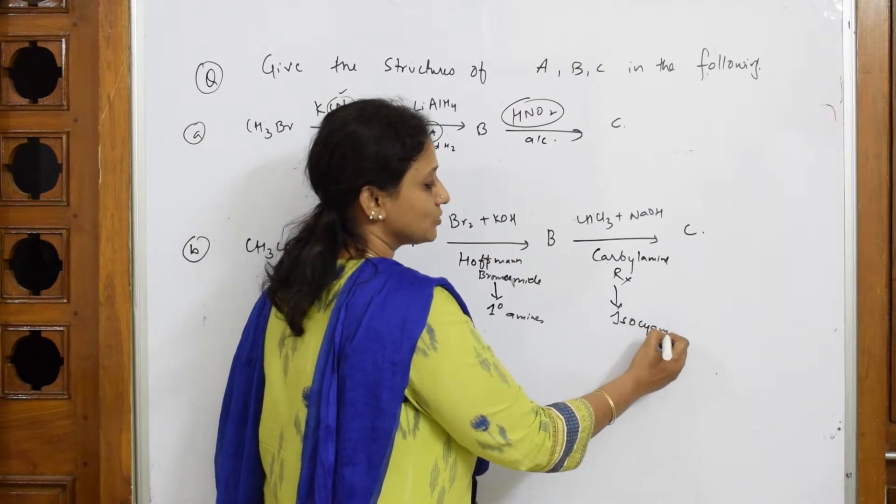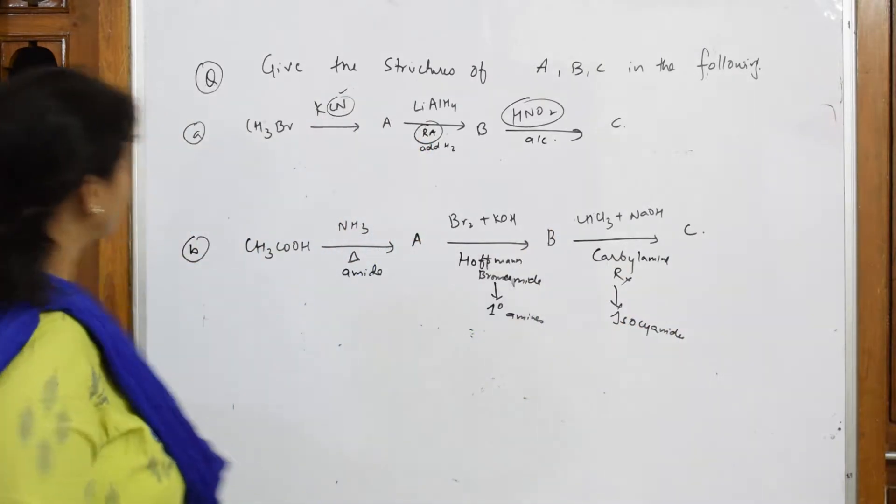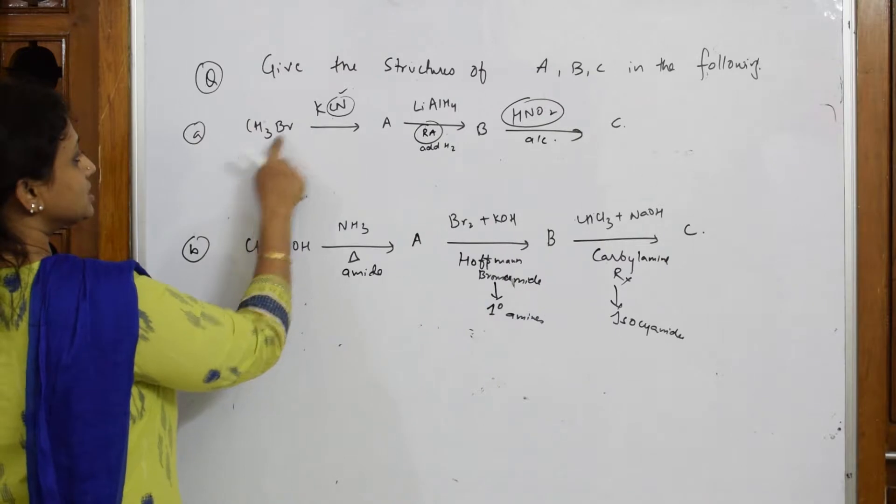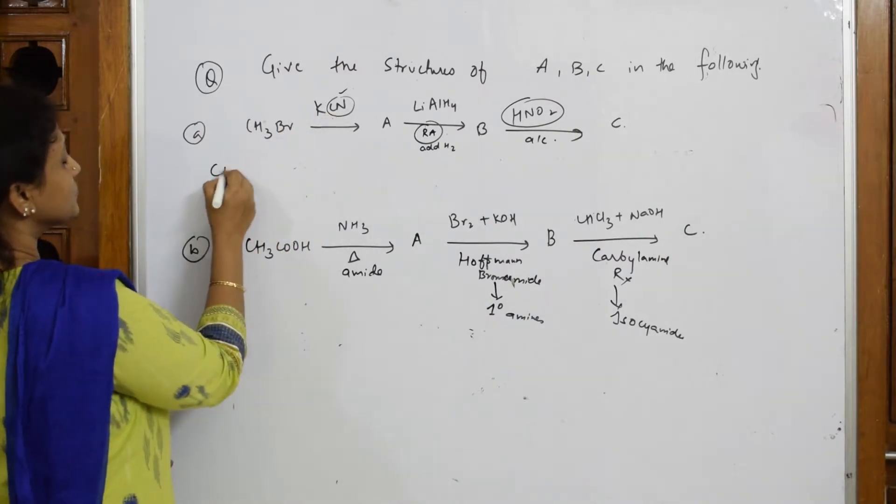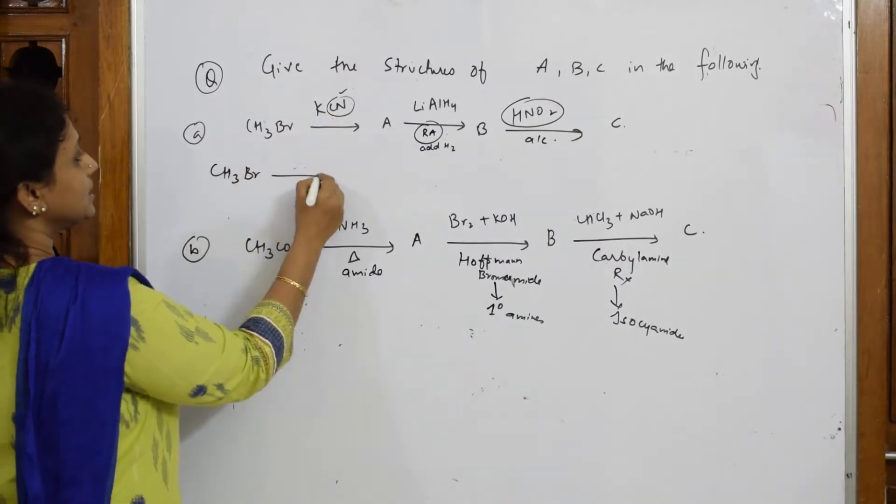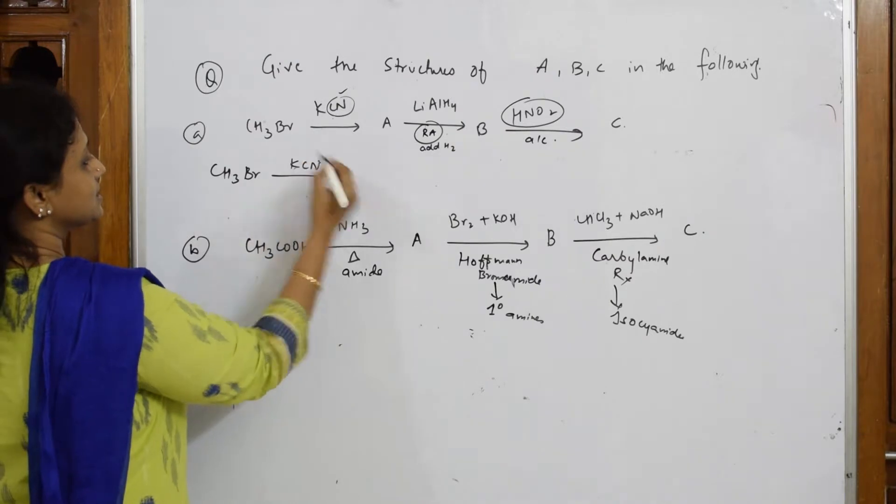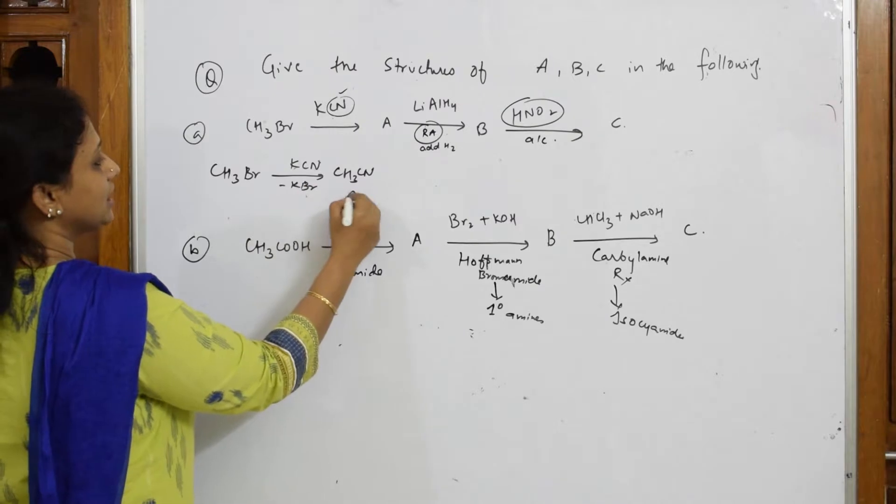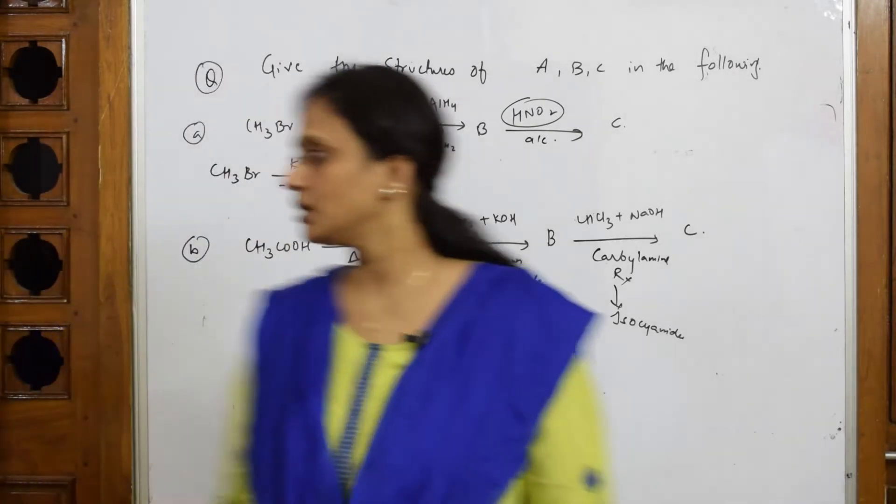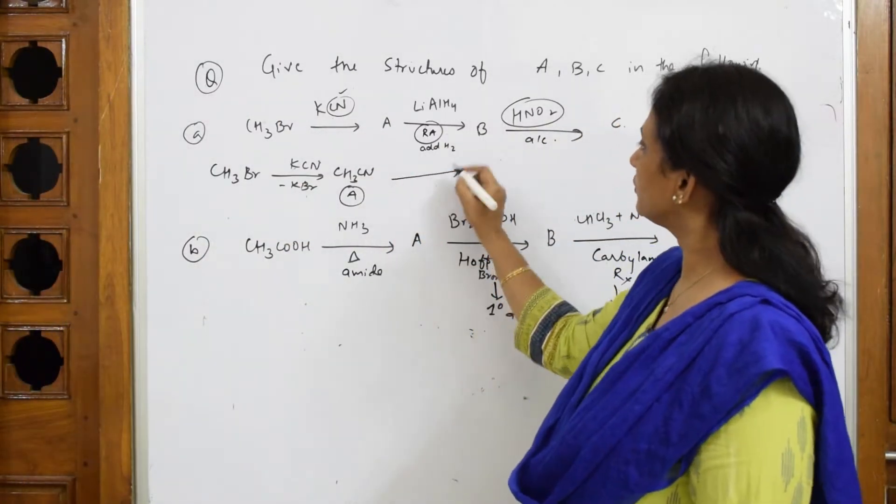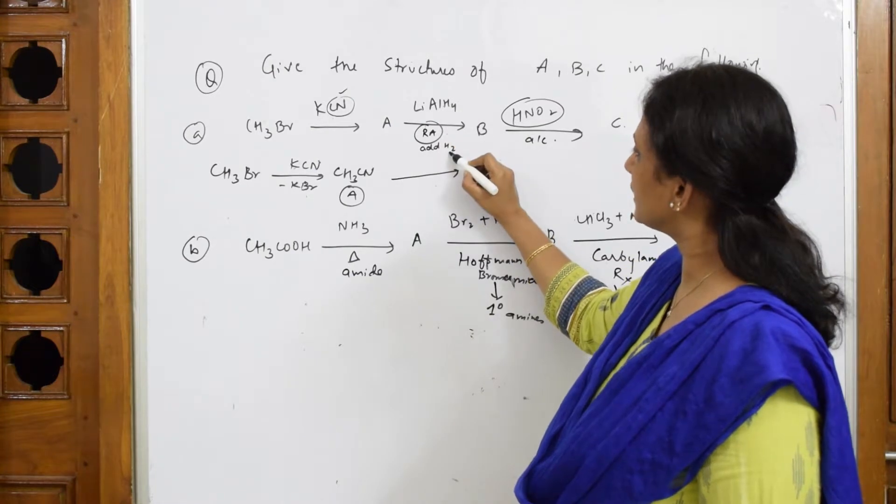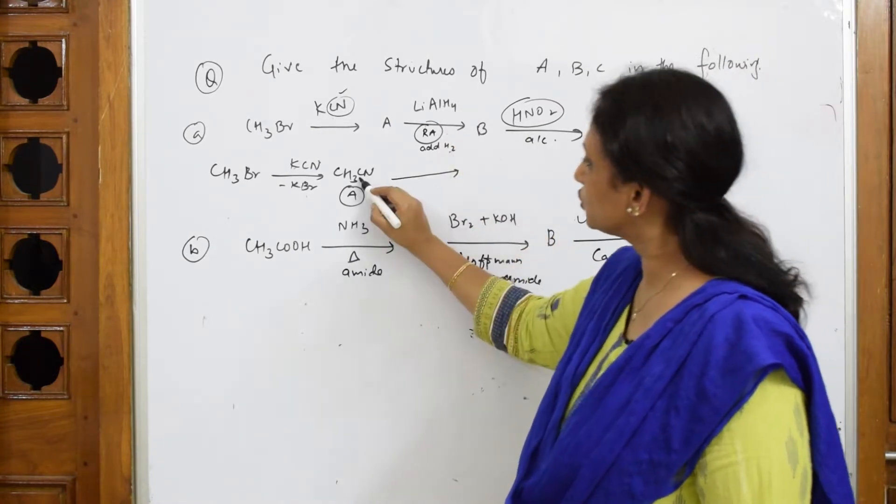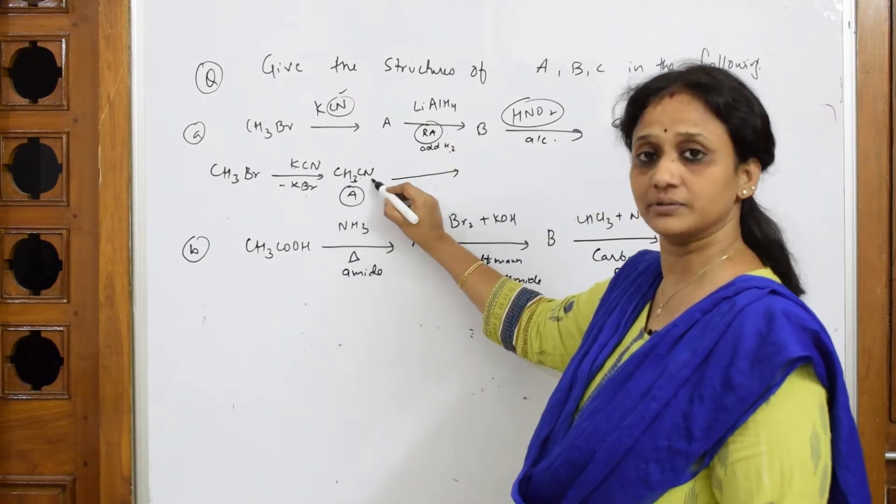With this data I'll start right now. CH3Br - it's going to supply CN. Take this alkyl bromide and with KCN you get CH3CN and minus KBr. This is your A. Done. To this compound I'm going to use reducing agents which would supply hydrogen. How many hydrogens? Two will add here, two will add here.